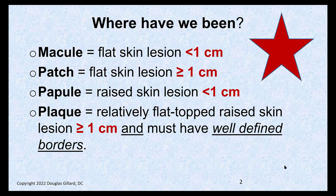Where have we been? We've been talking about the language of dermatology. We talked about a macule as a skin lesion that is flat and smooth on the surface. It is less than one centimeter in size — about the diameter of the bottom of a AAA battery. A patch is the same thing, a smooth skin lesion, but equal to or bigger than one centimeter. A papule is a raised bump less than one centimeter in size. A plaque is a raised bump one centimeter or greater in size, with a well-defined border and flat top.